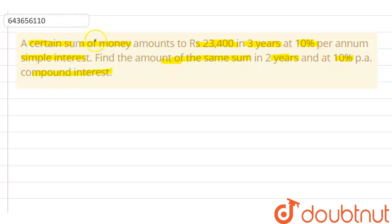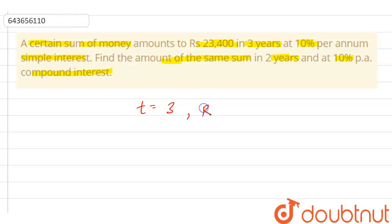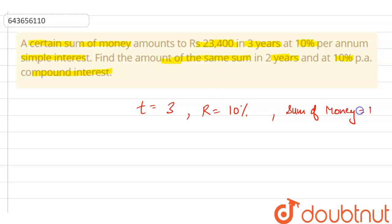As the question says that a certain sum of money amounts to rupees 23,400 in three years at 10% per annum simple interest, we can write that time t is equal to 3 years, rate r is equal to 10%, and let the sum of money be p. The formula for simple interest is SI = (p × r × t) / 100.